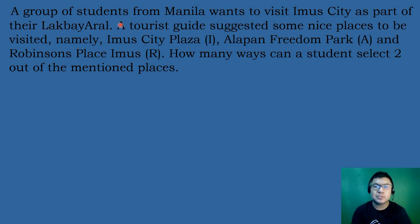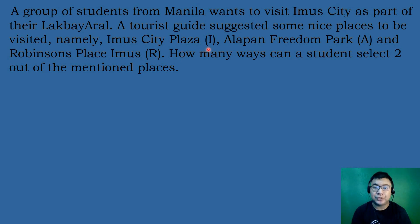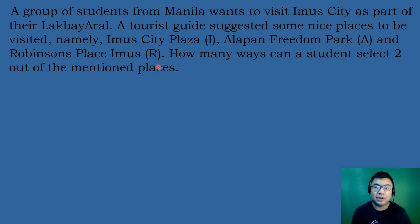A group of students from Manila wants to visit Imus City as part of their Lakbay Aral. A tourist guide suggested some nice places to be visited: Imus City Plaza (letter I), Alapan Freedom Park (letter A), and Robinson's Place Imus (letter R). How many ways can a student select two out of the mentioned places?